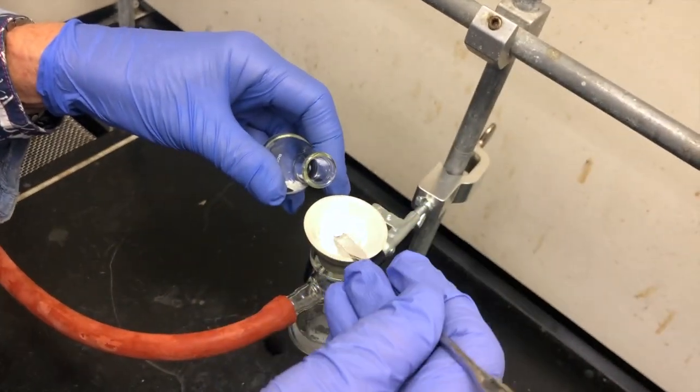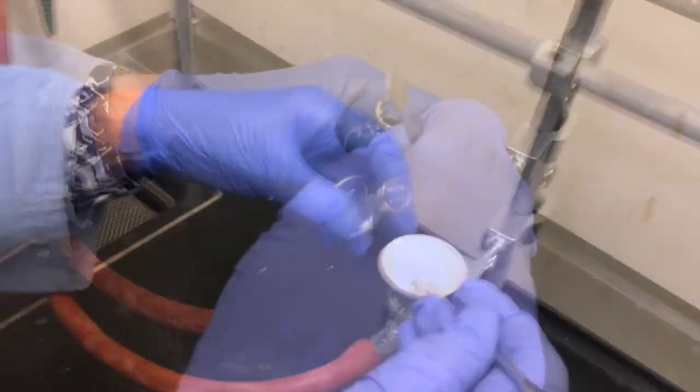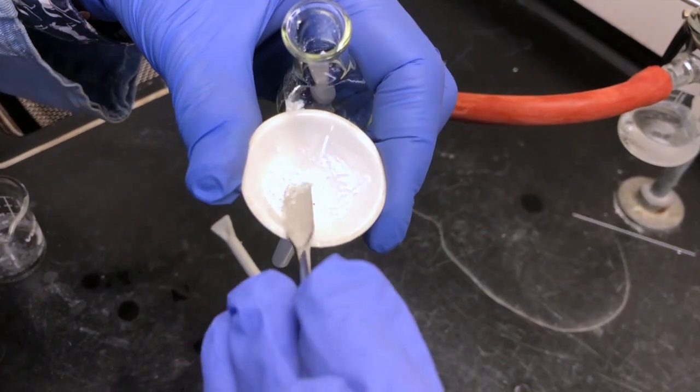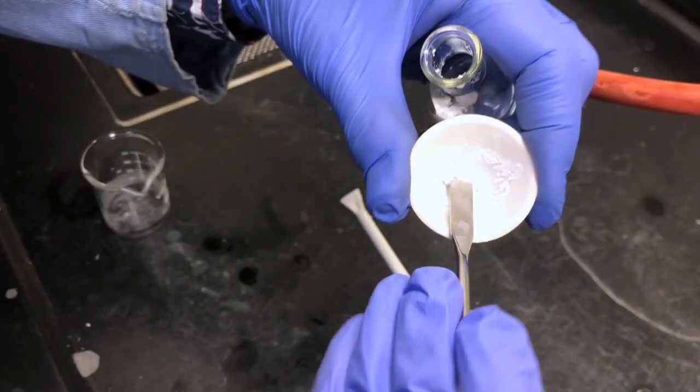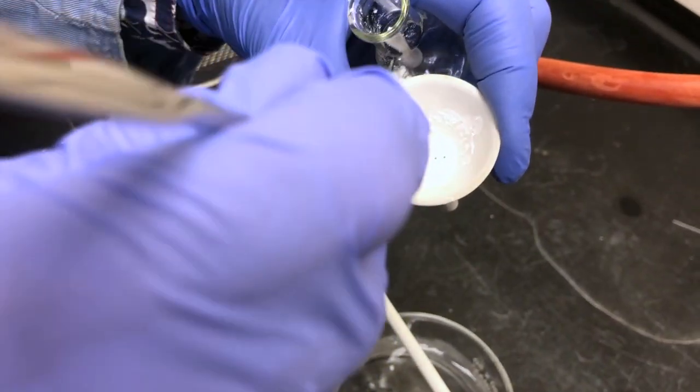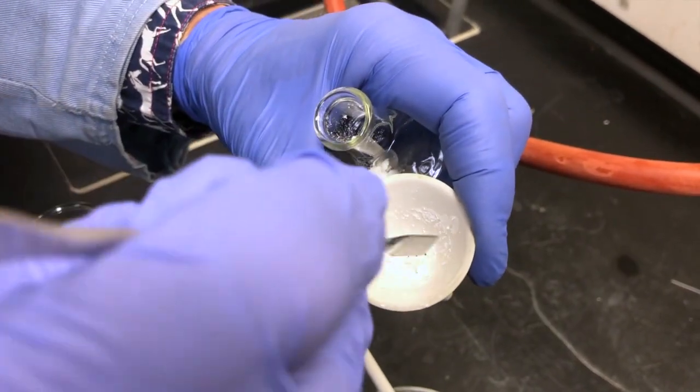It's a tedious process to get all the crystals out and you also have to be careful not to shred your filter paper in the process. You don't want to put any filter paper in with the product because it'll mess up the recrystallization. So remove that filter paper, scrape as much off as you can, get as much out, and transfer it all into that Erlenmeyer flask.